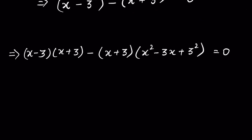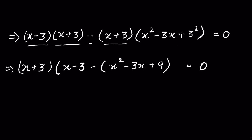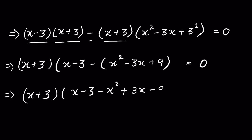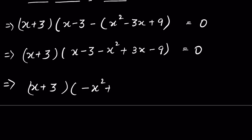Now (x + 3) is common to both terms, so we factor it out: (x + 3)[(x − 3) − (x² − 3x + 9)] is equal to 0. Expanding the bracket: (x + 3)(x − 3 − x² + 3x − 9) = 0, which simplifies to (x + 3)(−x² + 4x − 12) = 0.